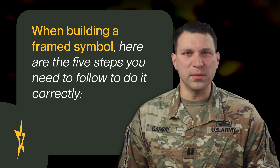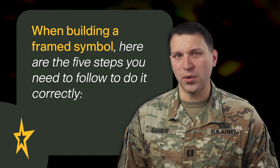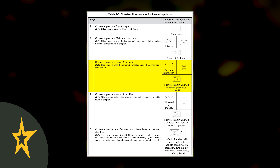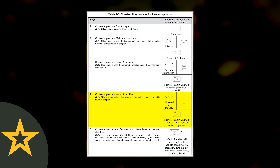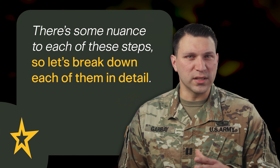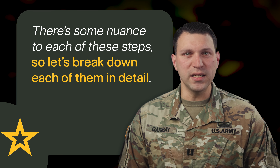When building a framed symbol, here are the five steps you need to follow to do it correctly. The first is to choose an appropriate frame. Next, you add a main function symbol, choose a sector 1 modifier, choose a sector 2 modifier, then finally add essential amplifier fields. There's some nuance to each of these steps, so let's break down each of them in detail.